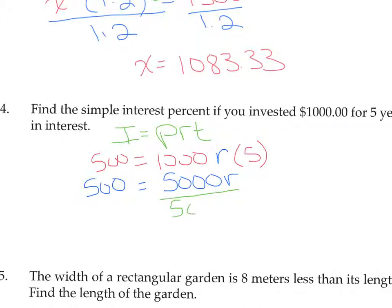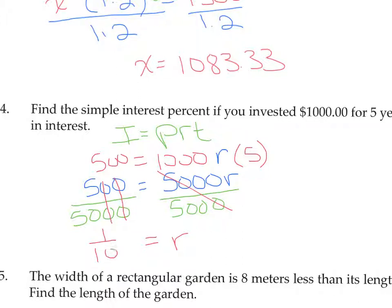To solve for R, we divide by 5,000. We're going to reduce this fraction down as far as we can, then change it to a percent because rate is always a percent. Reducing off the zeros, we're left with 5 over 50, which reduces to 1 over 10. One tenth as a decimal is 0.1, and as a percent that's 10%. So the interest rate is 10%.